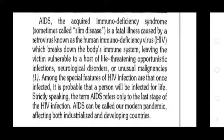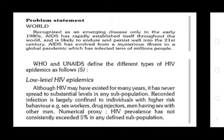Among the special features of HIV infection is that once infected, it is probable that a person will be infected for their whole life. Strictly speaking, the term AIDS refers only to the late stage of HIV infection. AIDS can be called a modern pandemic affecting both industrialized and developing countries. As an emerging disease only in the early 1980s, AIDS has repeatedly established itself throughout the world and will likely persist well into the 21st century, evolving from a mysterious illness to a global pandemic infecting tens of millions of people.